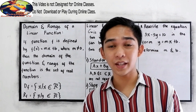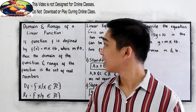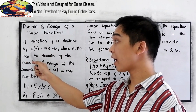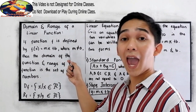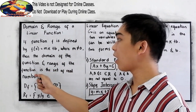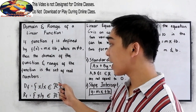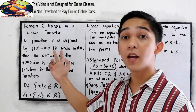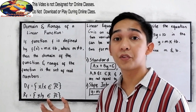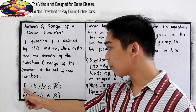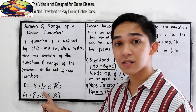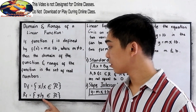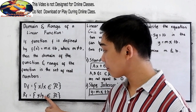Now let us discuss the domain and range of a linear function. If function f is defined by f of x is equal to mx plus b, where m is not equal to 0, then the domain and range of the function is the set of real numbers. The domain of the function is the set of x such that x is an element of the real numbers, and the range is the set of y such that y is an element of the real numbers.